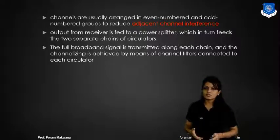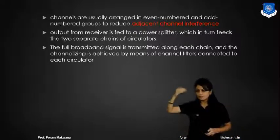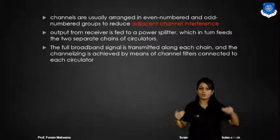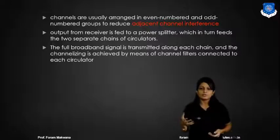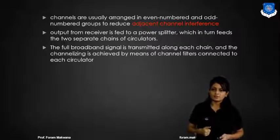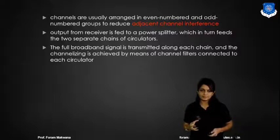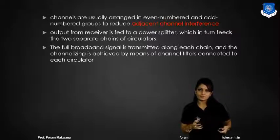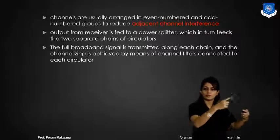These channels are arranged in even-numbered and odd-numbered groups to reduce adjacent channel interference. The output from the receiver is fed to the power splitter, which in turn feeds two separate channels of the separator.